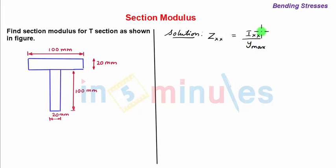So to determine the ymax as well as to determine the ixx axis we need to determine the centroidal xx axis. So let us represent a centroidal axis xx axis which is at a distance y bar from the bottom most section.